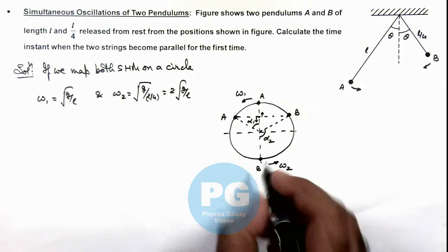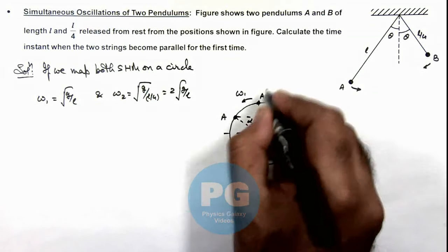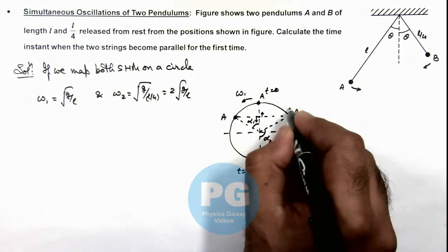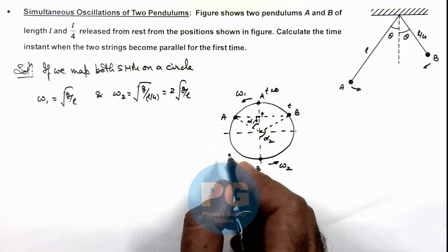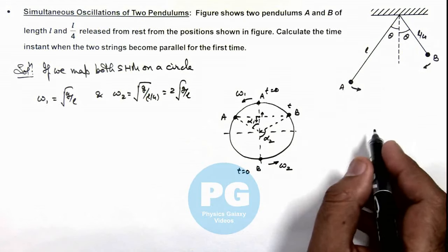So in this situation, if both start at t equal to zero and at time t, they are on the same angular position with respect to this vertical position we can say.